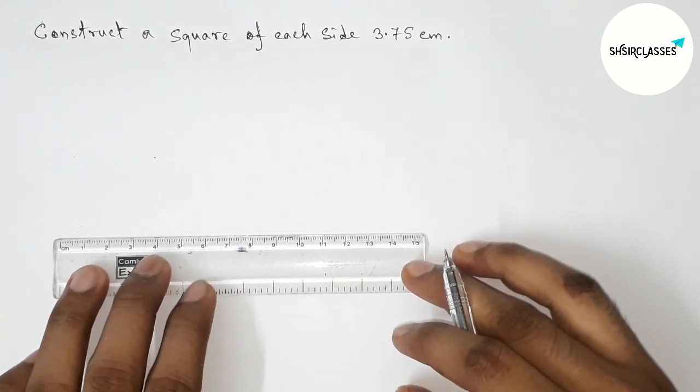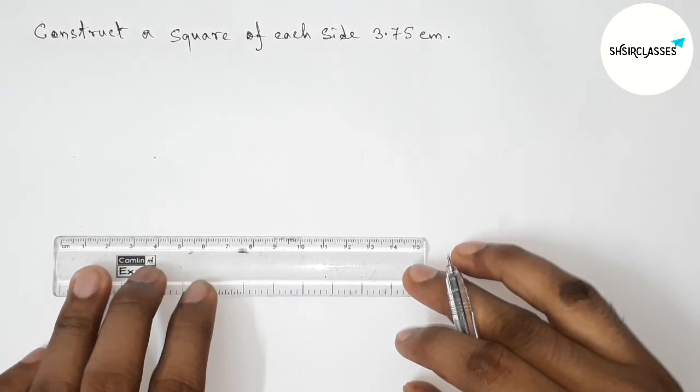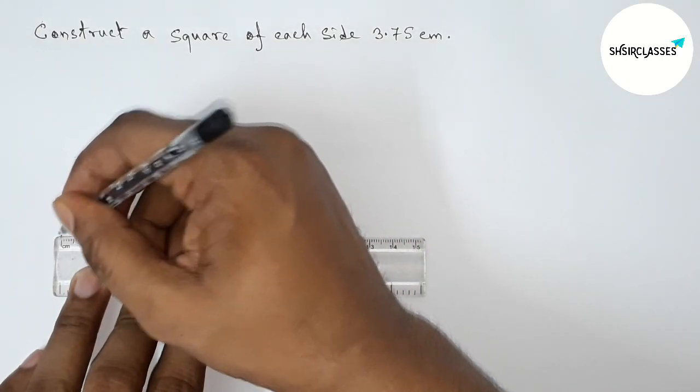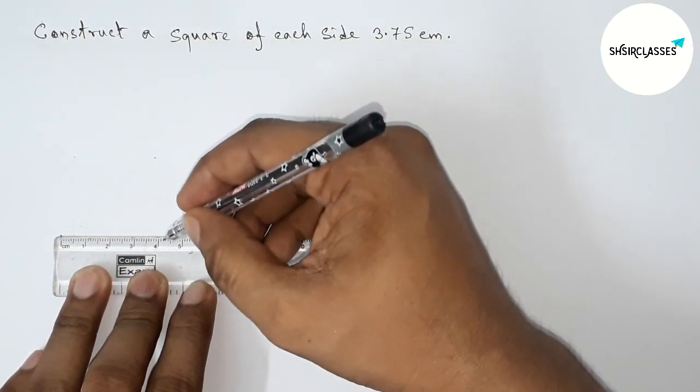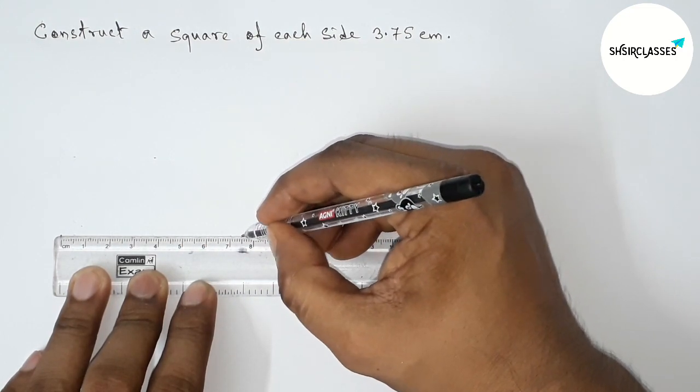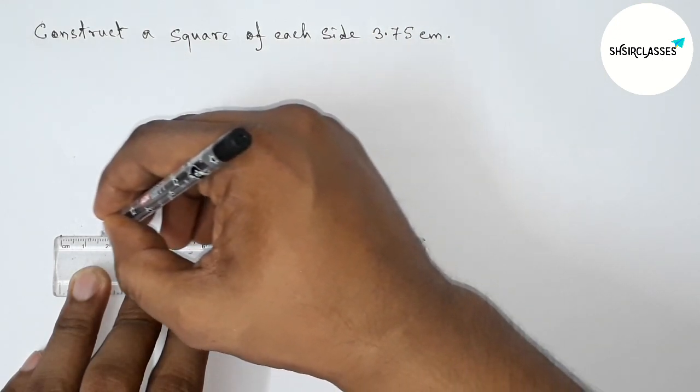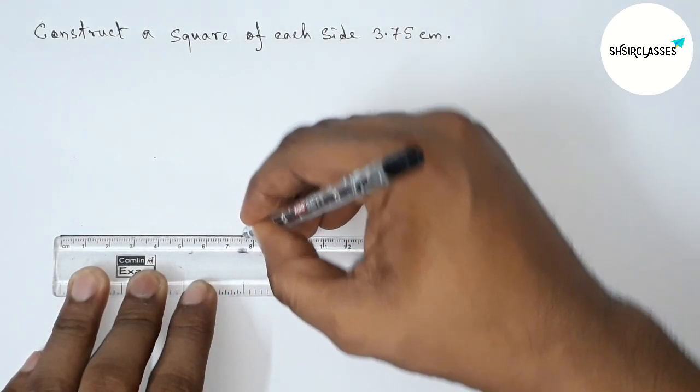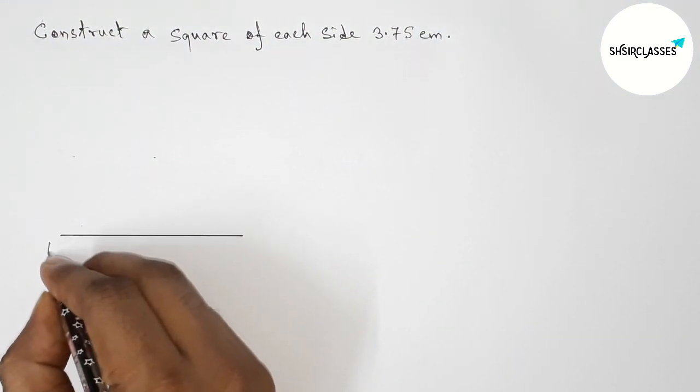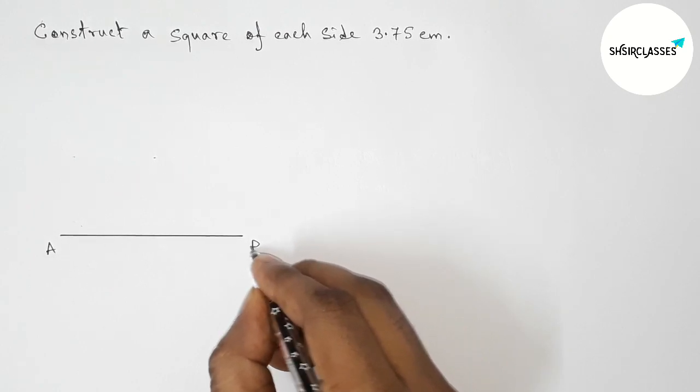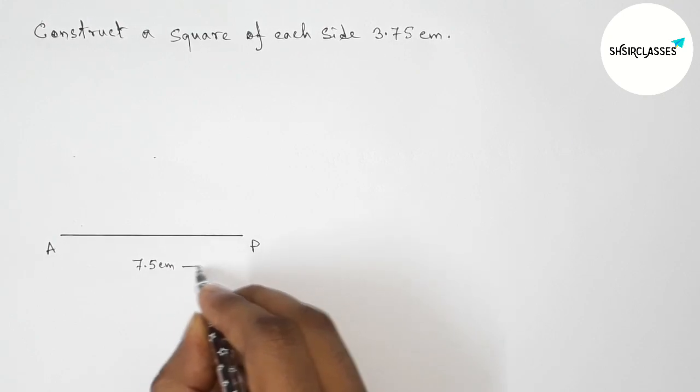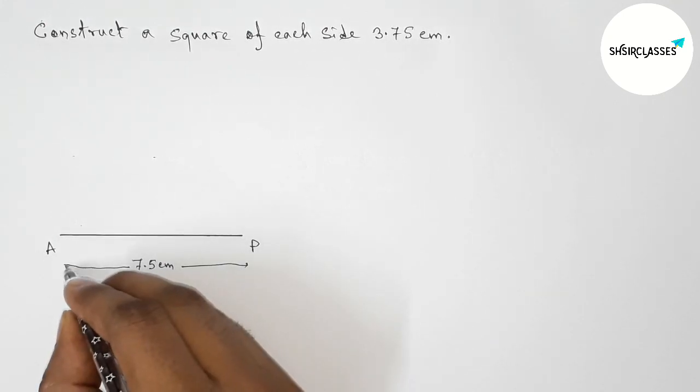So first of all, drawing here a line segment of length 7.5 centimeter. Counting here, this is 7, 7.5, so 7.5 centimeter line segment. Next taking here point A and here P, so AP is 7.5 centimeter line segment.